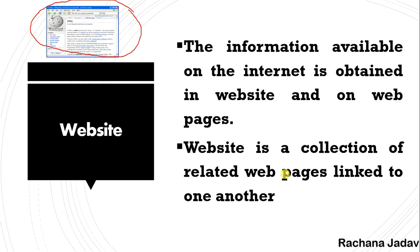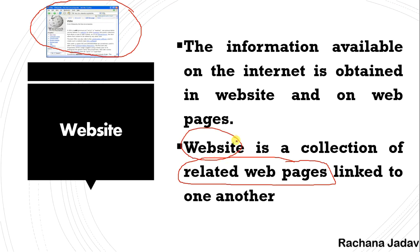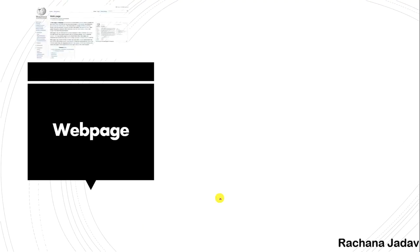A website is a collection of web pages. Our website is formed when we collect all the related pages together. These pages are linked to each other. If you need any topic, you find it on one website, click on it, and you go to that page — that is the linking.